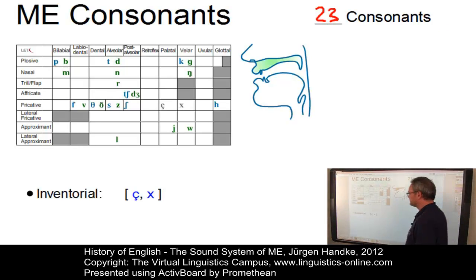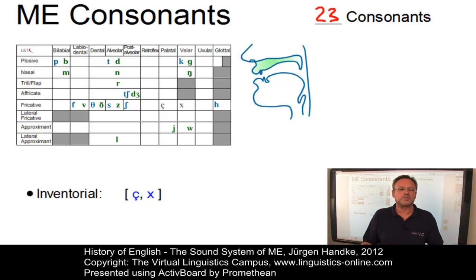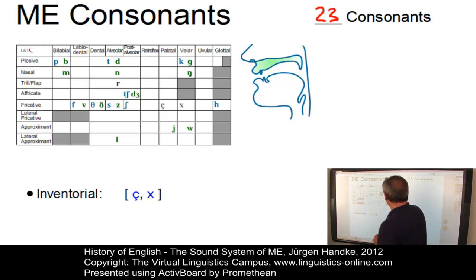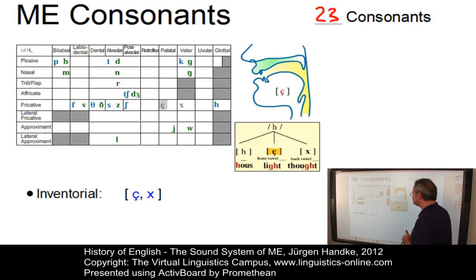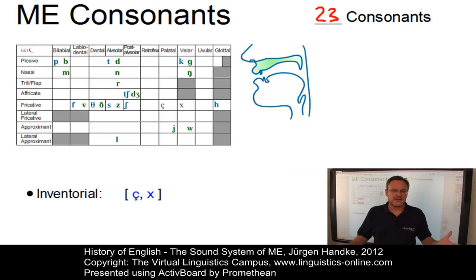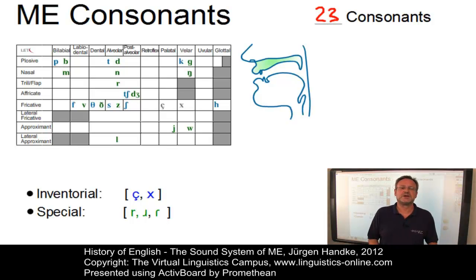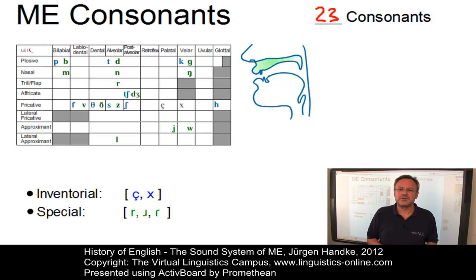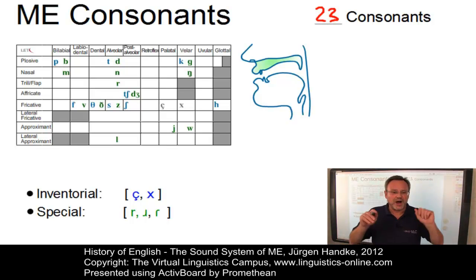Inventorially, the sound inventory was now almost identical with that of present-day English. Only on the allophonic level did we still have the palatal and velar fricatives as allophones of a glottal fricative — for example, /x/ as in 'licht' and /ç/ as in 'thucht'. As far as roticity was concerned, Middle English still had a high degree of roticity; the /r/ was pronounced in all contexts, even after vowels. As in Old English, it is hard to say what type of /r/ was used — the alveolar trill, the alveolar approximant, or in special cases the alveolar flap. It seems reasonable to assume that the allophones of /r/ varied freely.